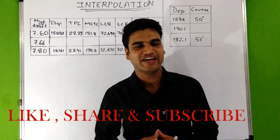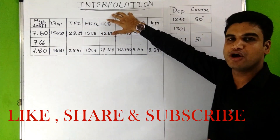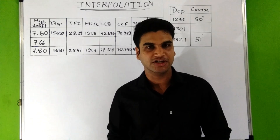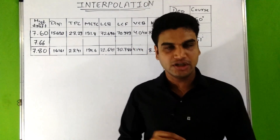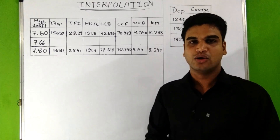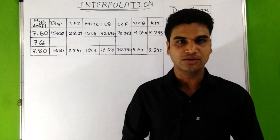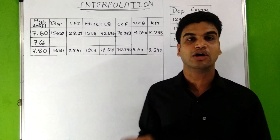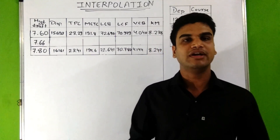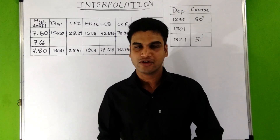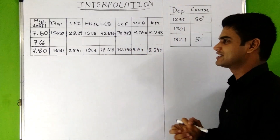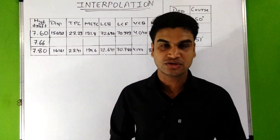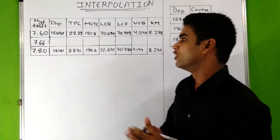Hello everyone. In this video we are going to discuss interpolation, which is important for numericals of ship stability and practical navigation. We will discuss how to use interpolation manually to find unknown values that lie between known values. In the next video, I will show how to use this process directly on a scientific calculator. In short, interpolation is defined as the process of determining unknown values which lie between known values.